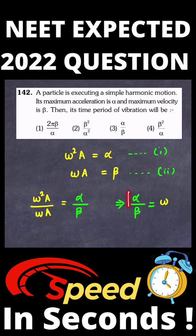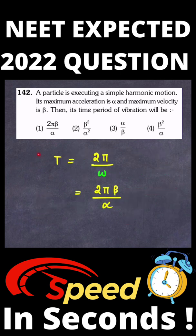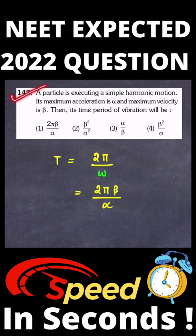We know that the time period of vibration is 2 pi by omega, and the value of omega we found to be alpha by beta. Substituting the value of omega, the time period of vibration will be 2 pi beta divided by alpha. So the correct option to this question is option number one.